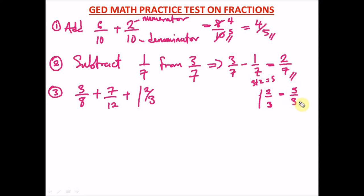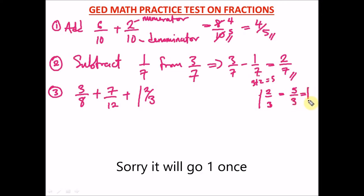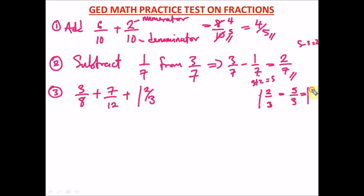Let me also quickly refresh how to convert an improper fraction back to a mixed fraction. With 5 over 3: ask how many times 3 goes into 5 — it goes 1 time. The remainder is 5 minus 3, which is 2. So you get 1 and 2 over 3. That's how you convert back to a mixed fraction.